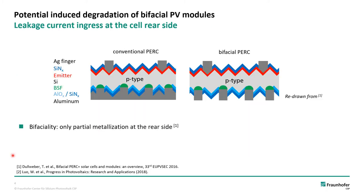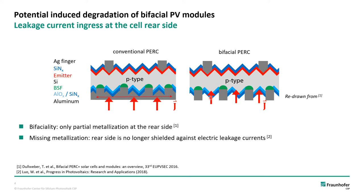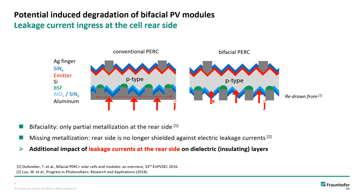The potential difference between the grounded frame and the solar cell is the root cause for potential induced degradation. Looking at a bifacial solar cell on the right side and a monofacial solar cell on the left side, you can see that the conventional cell, which has a fully covering metallization at the rear side, is shielded against leakage currents. But the bifacial cell is not shielded since this metallization is missing. This leads to additional leakage current paths into the cell that can activate two different mechanisms of potential induced degradation, which we will see on the next slide.